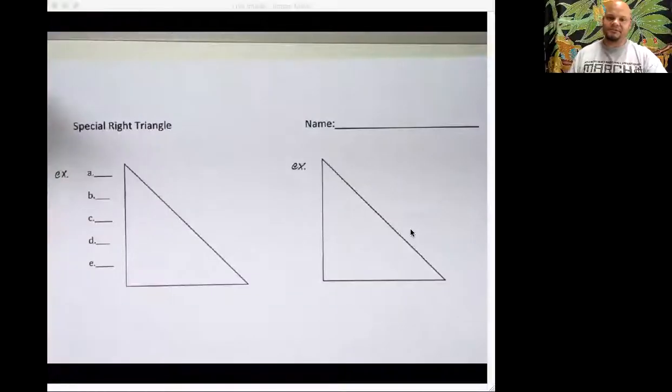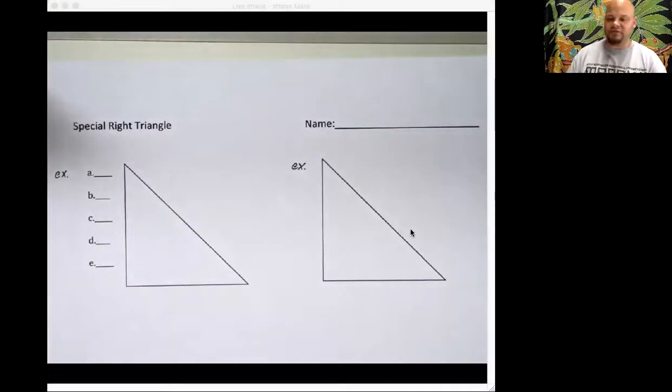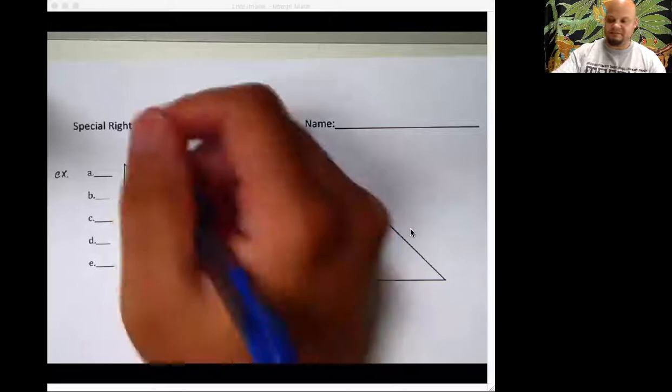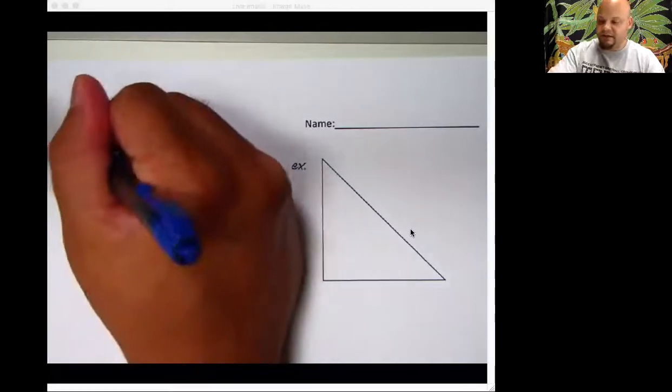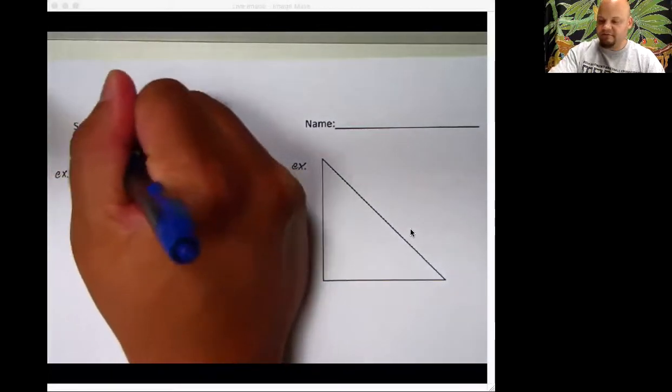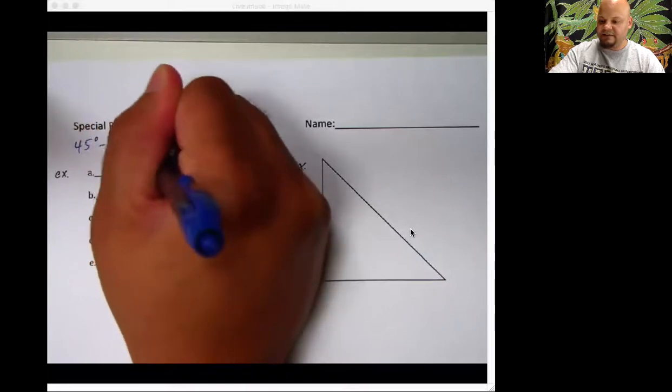Now let's go to what we're trying to work on right now, which is that bad boy: special right triangle. Now we're just going to be working with one special right triangle today, and that'll be the 45-45-90 degree triangle.